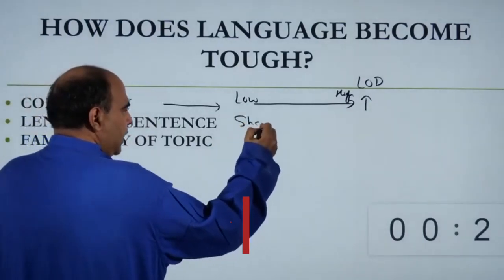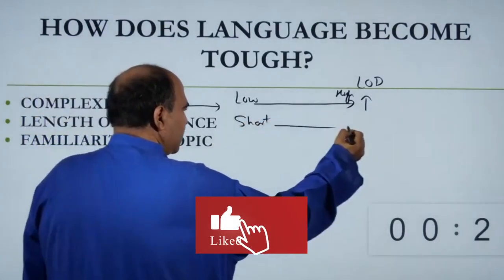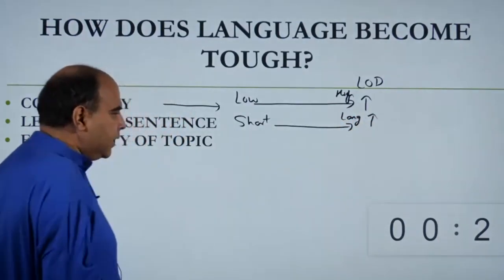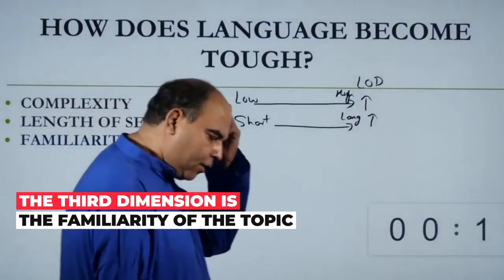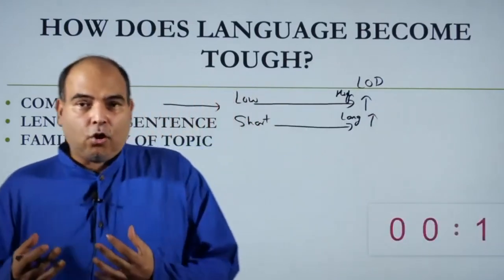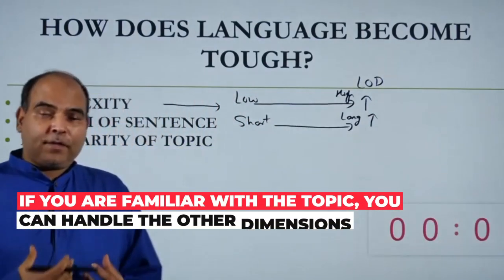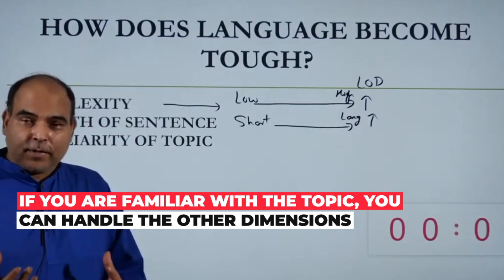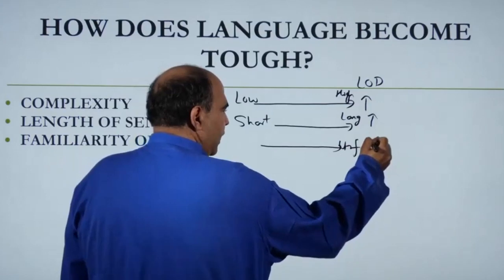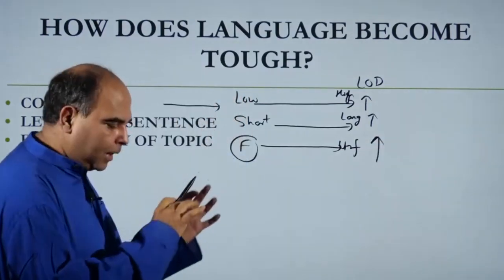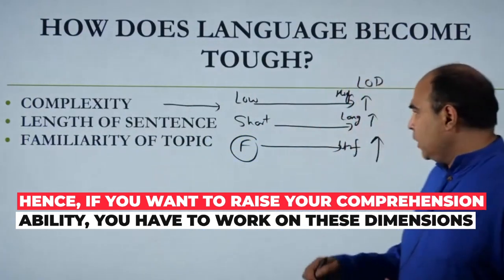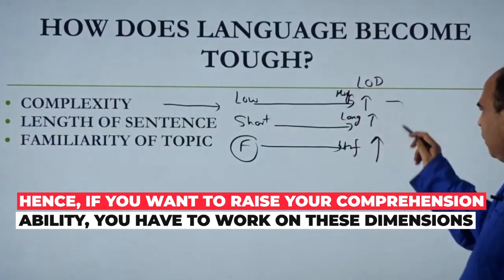If sentences are short, the difficulty level is lower; if sentences become long, the LOD of the passage increases. The third dimension is the familiarity of the topic. If you get complex language and long sentences but you're familiar with the topic, you can still handle it. But if the topic is unfamiliar, the difficulty level rises again. These are the three dimensions on which difficulty level goes up, and to raise your ability, you'll need to work on all three dimensions.